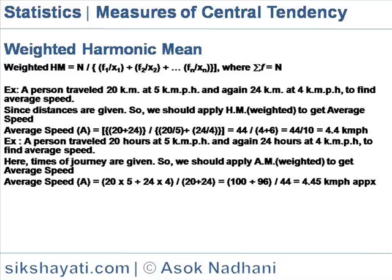Weighted harmonic mean. Weighted harmonic mean is equal to this in the similar way. If you give weight for each number, we get weighted harmonic mean. Weighted harmonic mean is equal to n by (f1/x1 + f1/x2 + ... + fn/xn), where sigma is equal to fn.